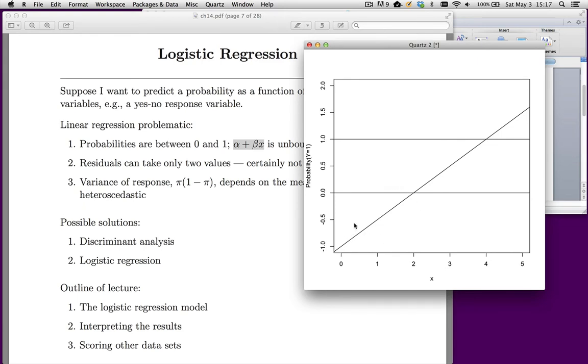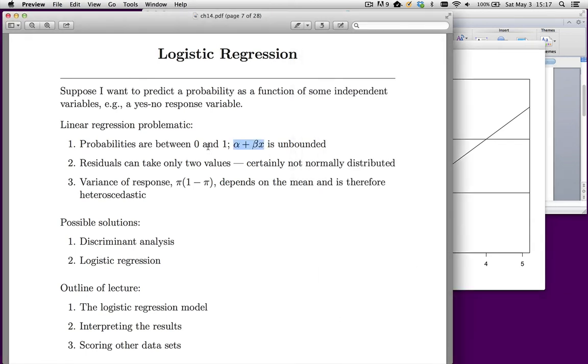Down in this region, we have predicted values that would be less than 0, and we can't have probabilities that are less than 0. So the point is linear regression is problematic because lines are unbounded. Probabilities have to be between 0 and 1.